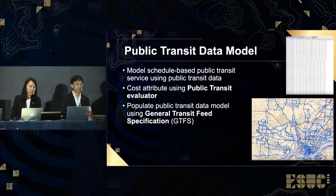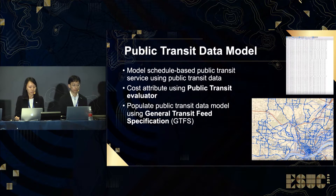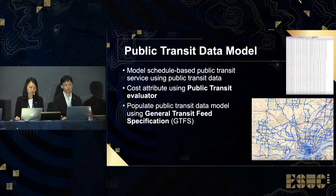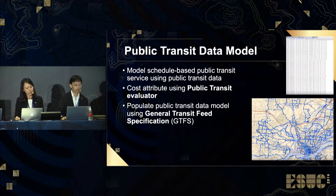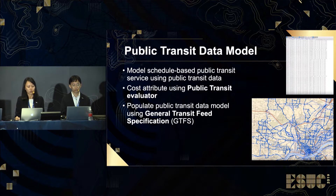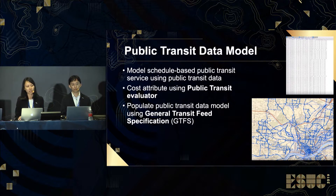The GTFS — General Transit Feed Specification — is used to create a valid set of public transit data model tables and feature classes by running the appropriate geoprocessing tools. Your network data set can also be configured to include public transit stops, lines, and schedules from more than one transit agency in the same feature classes and tables.